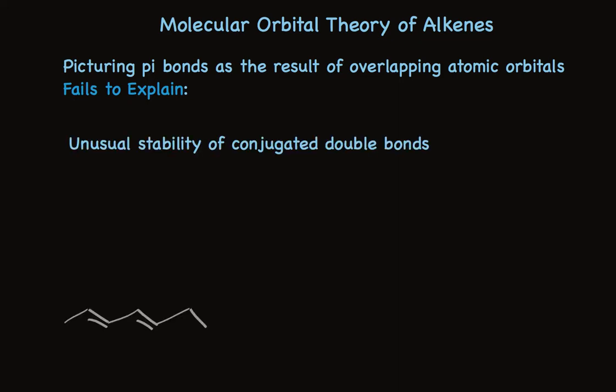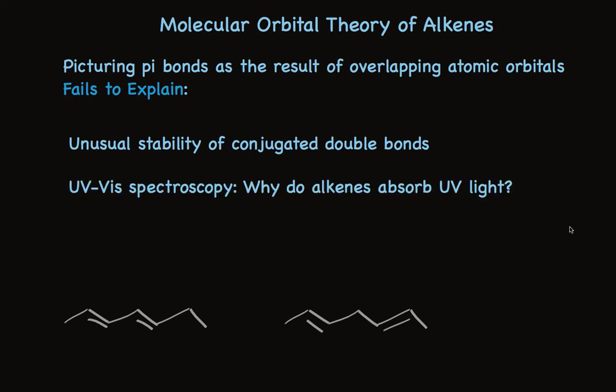For example, this conjugated diene is more stable than a very similar molecule that has isolated double bonds. Why is that? And it turns out that alkenes absorb in the UV or visible spectrum. What's going on there?